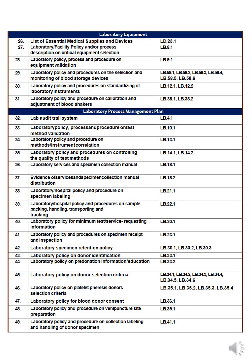Number twenty-seven is the laboratory facility policy and procedure for critical equipment selection — how to use critical equipment. You must have a policy for this. Numbers twenty-eight and twenty-nine are related to the blood bank and will be discussed later.